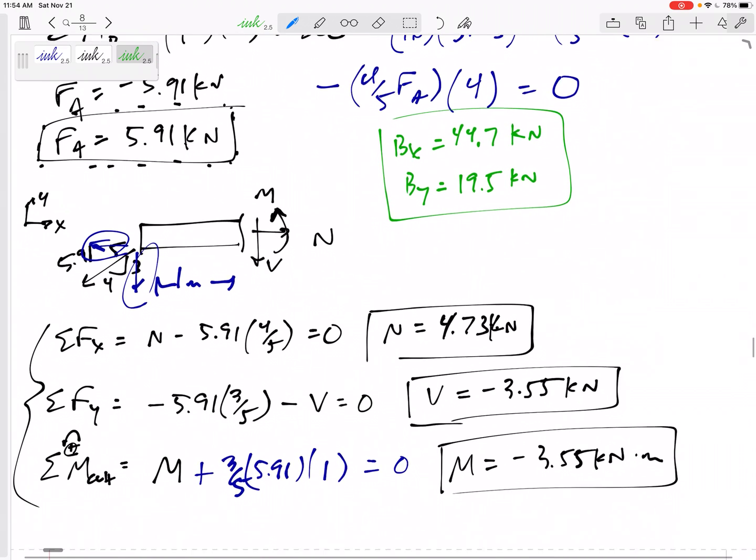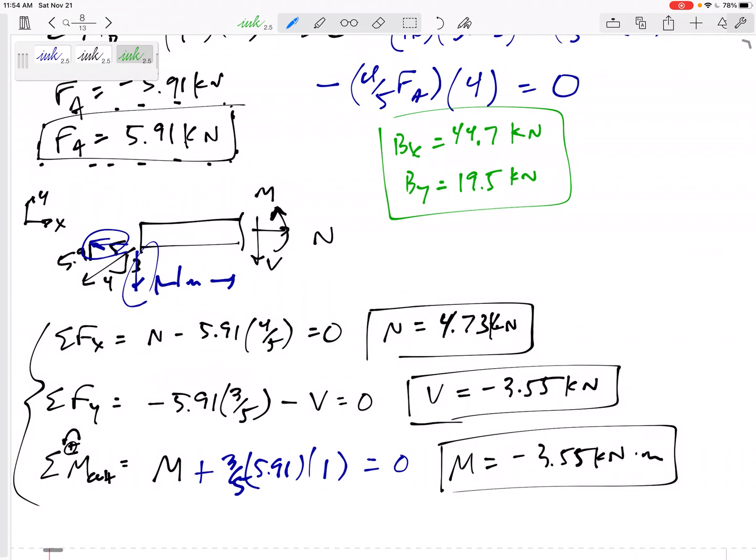And I still should have gotten exactly what I got. Positive 4.73, negative 3.55, and a moment of negative 3.55 kilonewton meters. Now, these two will not usually be the same. They are the same just because there are no other forces and we've got this dimension of 1. But those will usually not be the same. Anyway, there we go. That's our internal load problem right there. This is from last year's final exam.